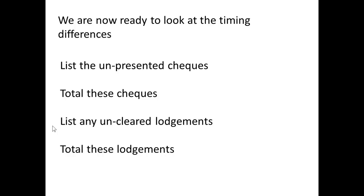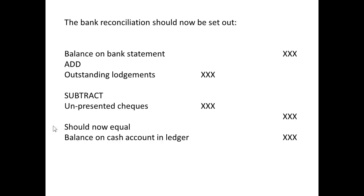We are now ready to look at the timing differences. List the unpresented checks and total those checks; list any uncleared lodgements and total those lodgements. Here's how your bank reconciliation should be set out: take the balance on the bank statement, add any outstanding lodgements, subtract any unpresented checks, and the result should equal the balance on the cash account in the ledger.